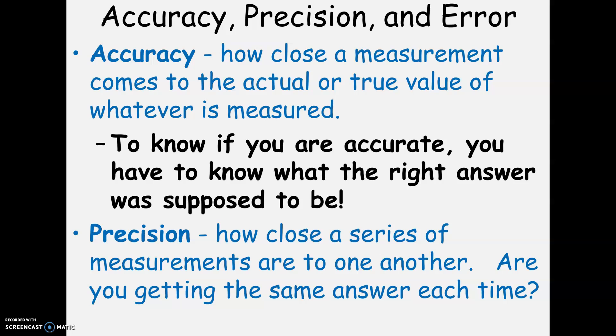Precision, on the other hand, is a little bit different. Precision is how close multiple measurements are to one another. So if I measure something three different times, or three of us measure it, do we all get the same answer? So it doesn't necessarily have to do with whether we're correct or not, but are we all getting the same thing?